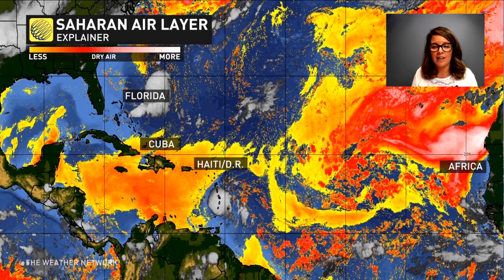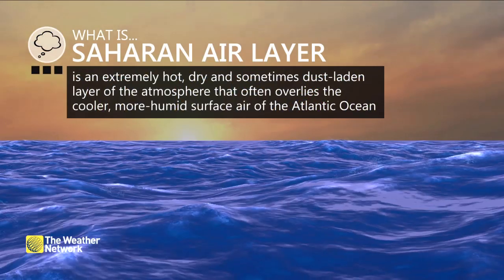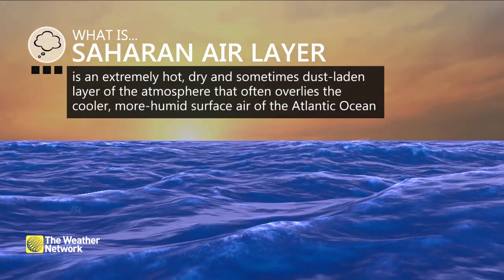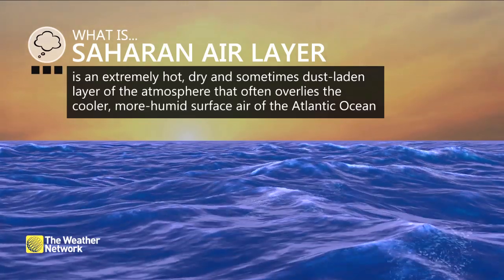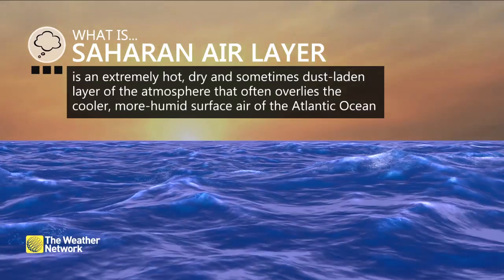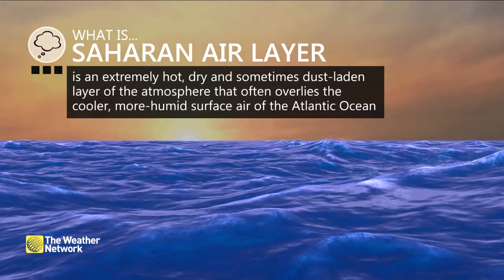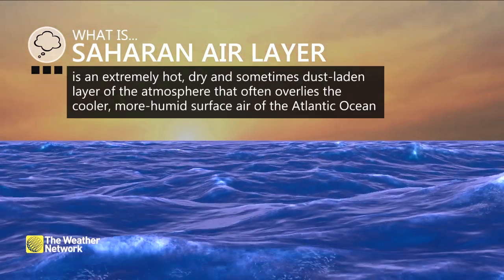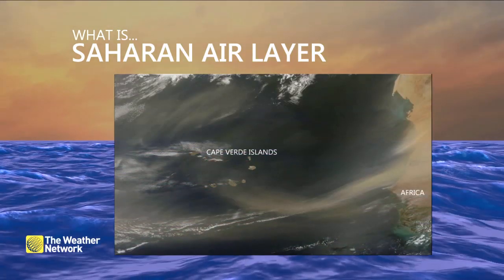The west coast of Africa is where all of our tropical systems are actually born, coming out of big clusters of thunderstorms off the Saharan Desert. The Saharan Air Layer, by definition, is an extremely hot, dry, and sometimes dust-laden layer of the atmosphere that often overlies the cooler, more humid surface air of the Atlantic Ocean.